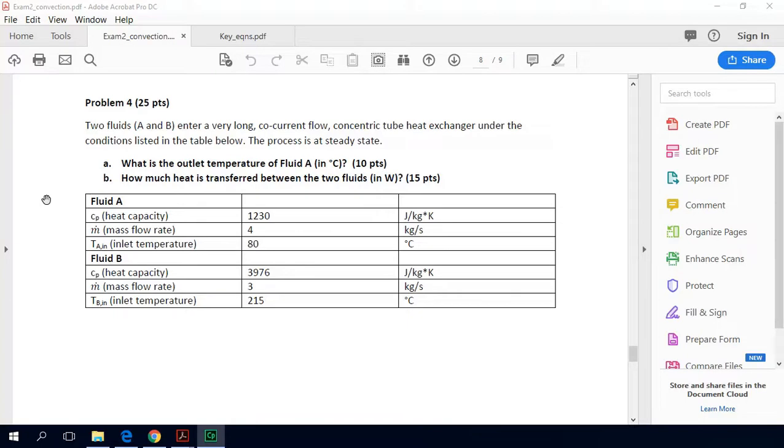The problem reads: two fluids A and B enter a very long co-current flow concentric tube heat exchanger under the conditions listed in the table below. The process is at steady state. What is the outlet temperature of fluid A?